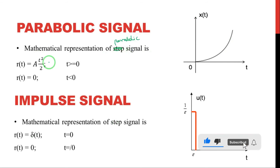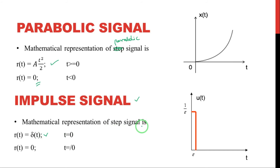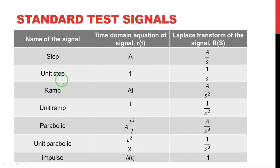The parabolic signal's mathematical representation is r(t) = A·t²/2, for t ≥ 0, and zero for t < 0. Next is the impulse signal — its magnitude is infinity at t = 0, represented as delta(t). At t = 0, the graph has its highest value, that is delta(t), and for t not equal to zero, the value is zero.